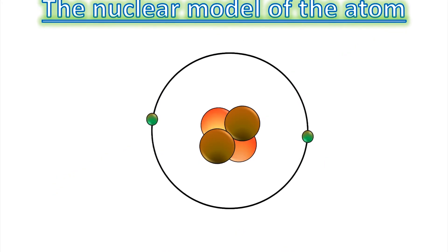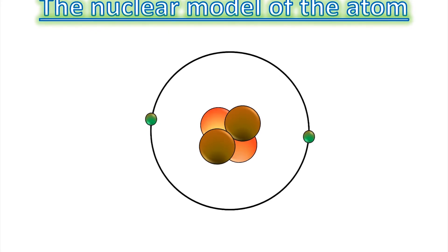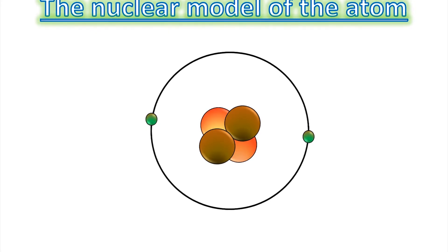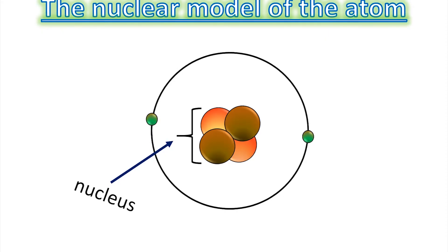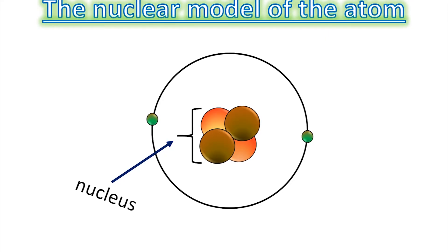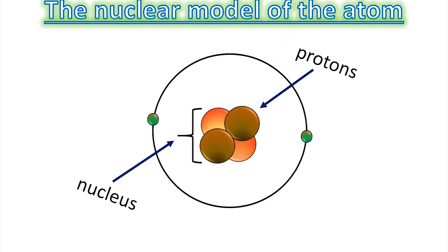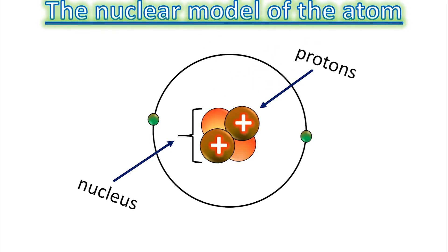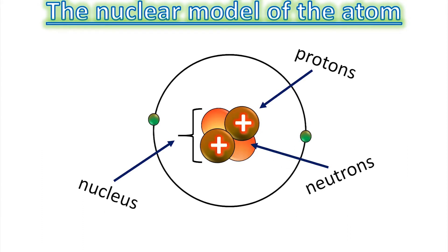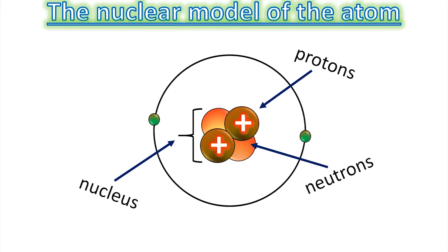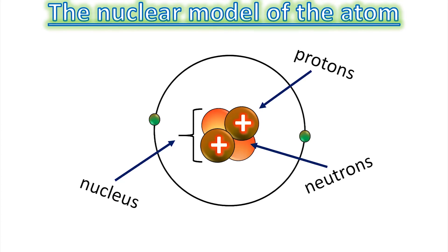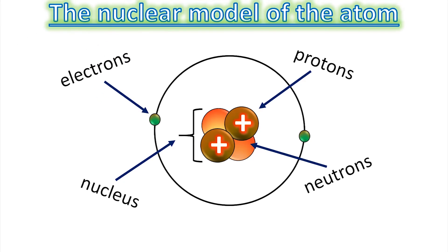So there is the nuclear model of an atom. Can anyone name the parts? The middle bit is of course the nucleus of the atom, that's the name nuclear model. Anyone know what it's made of? That's right, we have protons, which have a positive charge, and then we have the neutrons, which have no charge whatsoever. They make up the nucleus, and orbiting that nucleus we have the electrons.